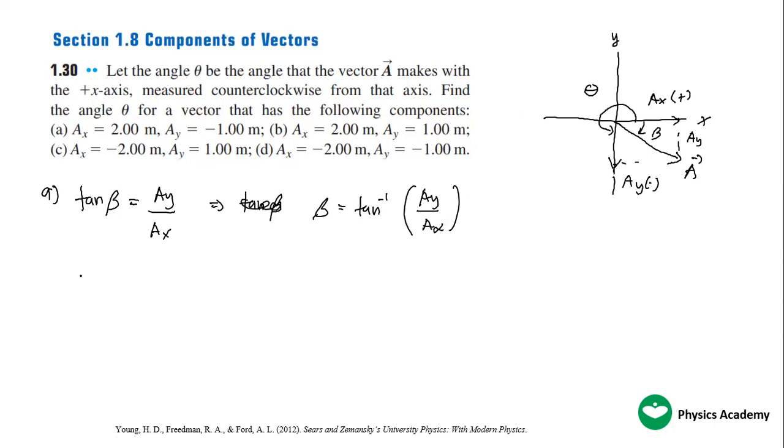The tangent of beta implies that beta is equal to the tangent inverse of Ay over Ax. So beta equals tangent inverse of negative 1.0 meter over 2.0.